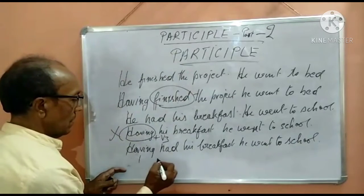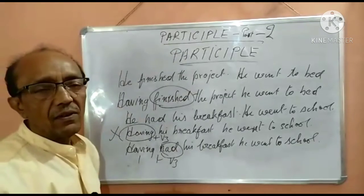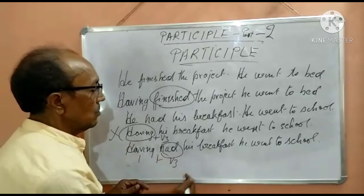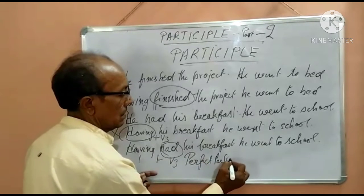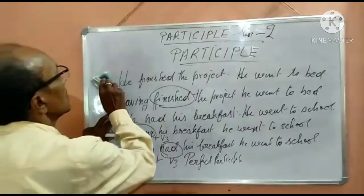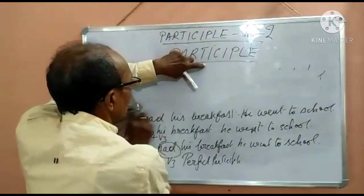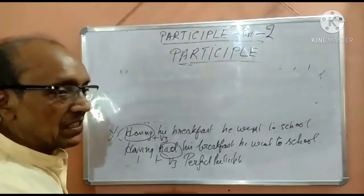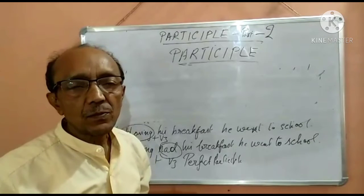Here 'having had' is 'having + V3,' and it denotes Perfect Participle. What is the sense of Perfect Participle? Even in sentences, Perfect Tense means one action is completed. When one action is completed, the second one starts — that is Perfect Participle.